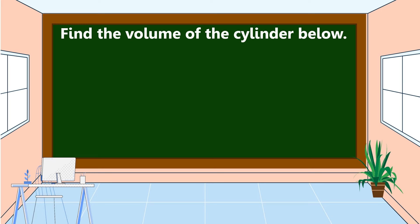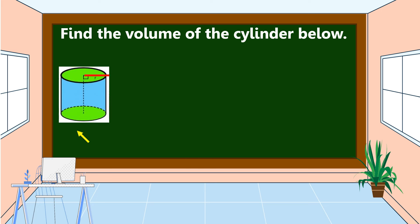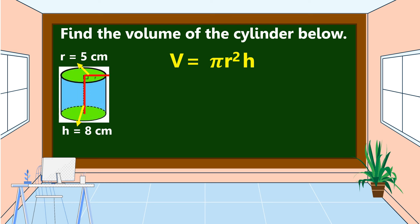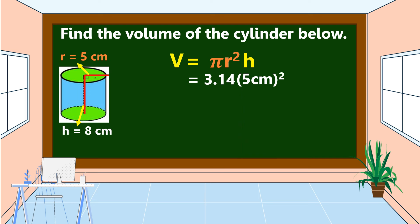Find the volume of a cylinder with a radius of 5 centimeters and a height of 8 centimeters. To find the volume, we're going to use this formula: Volume is equal to pi times radius squared times height. The estimated value of pi is 3.14, the radius squared is 5 centimeters raised to the power of 2, and we multiply by the height, which is 8 centimeters.